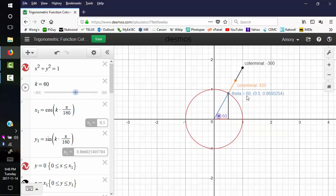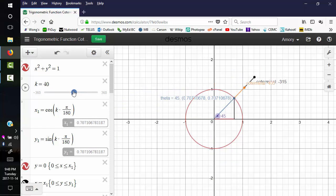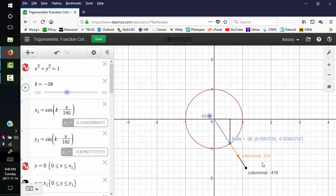If we look at theta, we always have more coterminal angles. This is the x. This is the y. You can also think of this as cosine and sine. We're adding 360, subtracting 360. If we go the other way around, we're in the negative values for theta, and we still have coterminal angles.